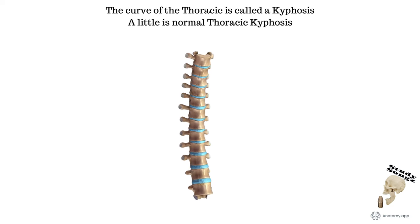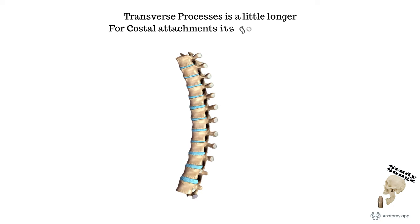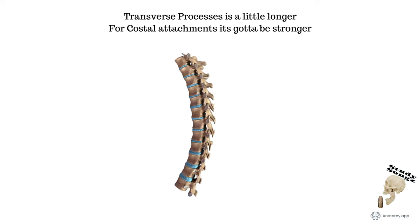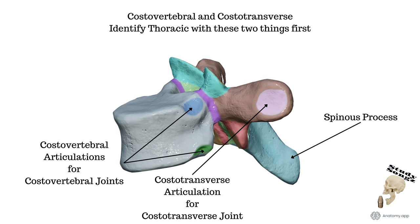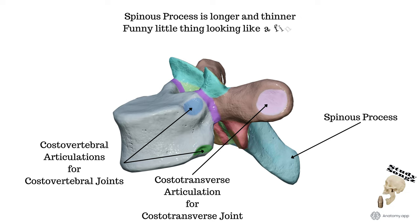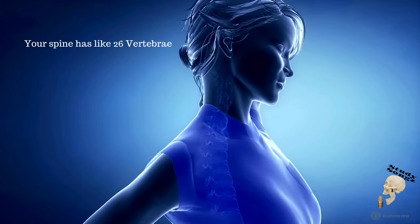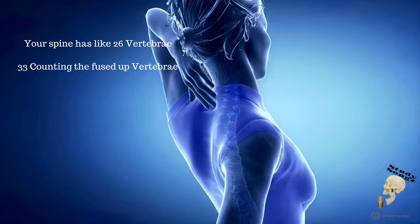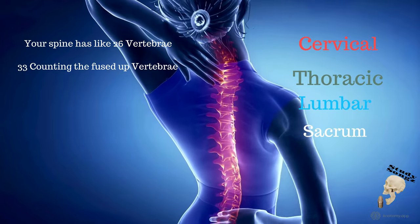Transverse process is a little longer for costal attachments — it's gotta be stronger. Costovertebral and costotransverse — identify thoracic with these 2 things first. Spinous process is longer and thinner, funny looking thing, looking like a finger.